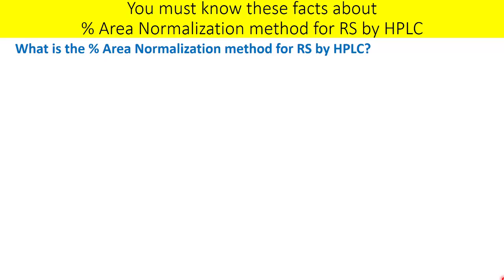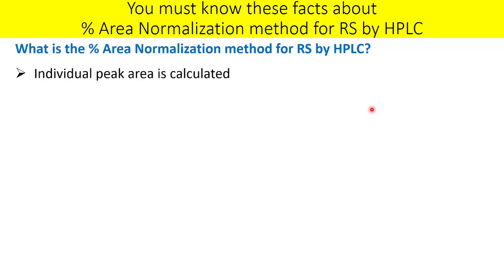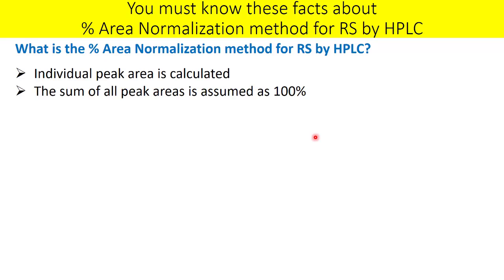Percent area normalization for related substances by HPLC — RS stands for related substances — and it can also be used for gas chromatography or any chromatography technique. When you talk about percent area normalization, you calculate the individual peak area for related substances as well as for your drug substance or principal compound, assuming the sum of all peak areas equals 100%.